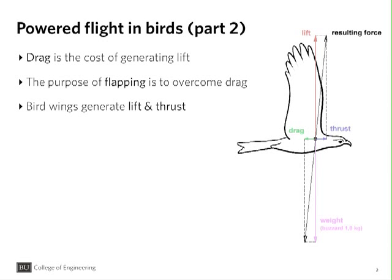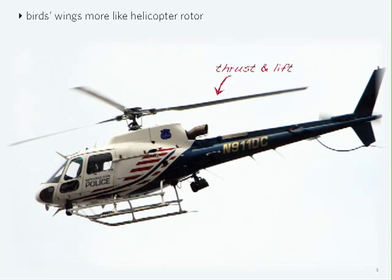Drag is the cost of generating lift. To generate lift, the wing must move through the air and therefore drag is inevitably produced. The purpose of flapping is to overcome this drag by producing thrust. But unlike a propeller, the bird's wing generates both lift and thrust, making it more similar to a helicopter rotor.